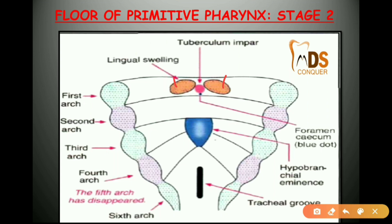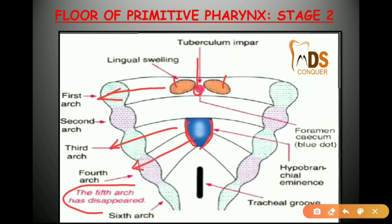The lingual swellings and the tuberculum impar are formed in relation to the first arch. There is another structure called the hypobranchial eminence, which is formed in relation to the medial parts of the third and fourth arches. The fifth arch has disappeared. These two stages are the important stages for the formation of the tongue.